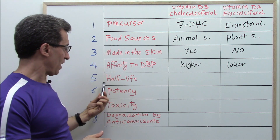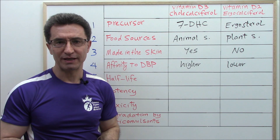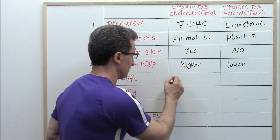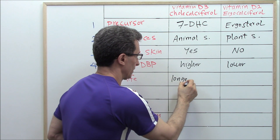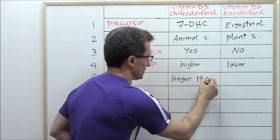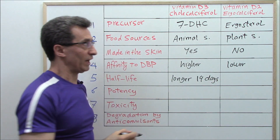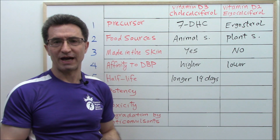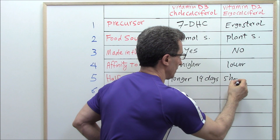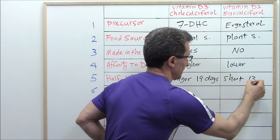Number five: half-life. Vitamin D3 has a longer half-life of about 19 days, but vitamin D2 has a shorter half-life of about 13 days.